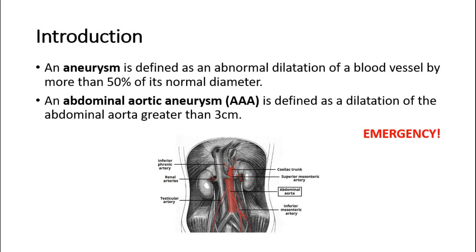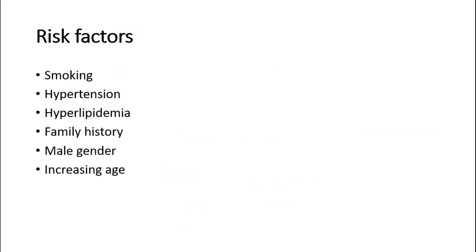This picture shows the abdominal aorta colored in red. AAA is an emergency condition so immediate intervention is often required. Risk factors for AAA include smoking, hypertension, hyperlipidemia, family history, male gender, and increasing age.